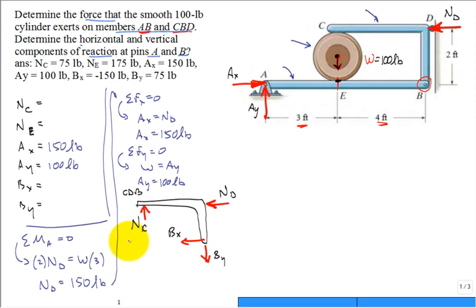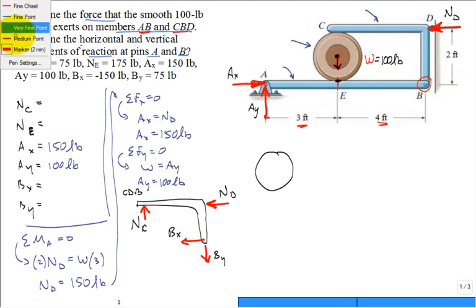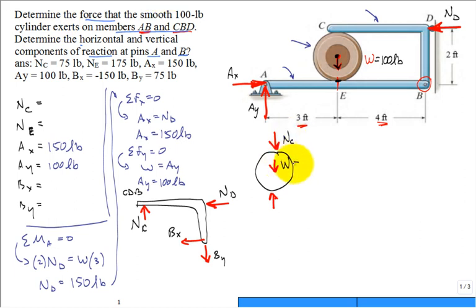Probably in the interest, let's go ahead and draw the free body diagram of some other members. Let's do it for the cylinder. Maybe I should put the cylinder right here. And it's going to have NC. It's going to have the weight. And it's going to have NE.